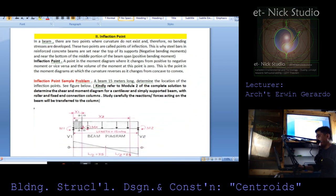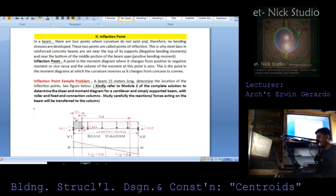Another topic: the inflection point. In a beam, there are two points where curvature does not exist, and therefore no bending stresses are developed. These two points are called points of inflection. This is why steel bars in reinforced concrete beams are set near the top at supports — for negative bending moments — and near the bottom at the middle of the span for positive bending moments.